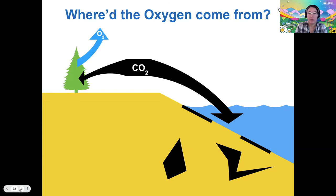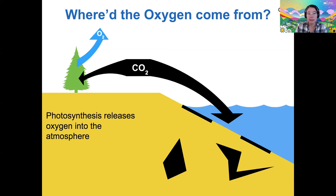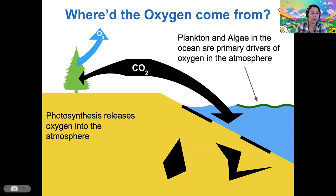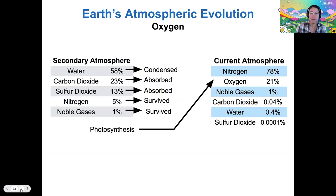You might ask: where did all that oxygen come from, since it's a really huge component of our current atmosphere? The answer is simply that photosynthesis releases oxygen into the atmosphere — but most of it didn't come from plants on the surface. Most of it actually came from plankton and algae in the ocean. Early in the history of life on Earth, ocean-based photosynthetic organisms created a whole bunch of oxygen, which allowed animals to evolve and use it. So thanks, algae! Now we have a full picture of how everything came to be in our current atmosphere.